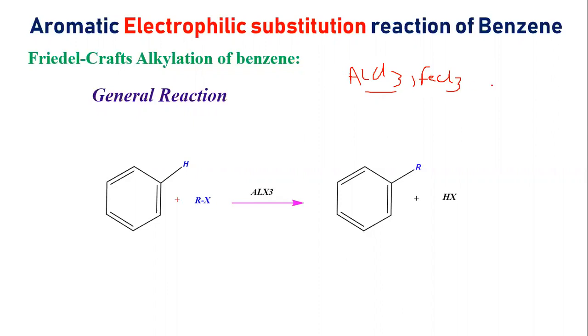In Acylation, you use C double bond O, an acyl group C double bond O, CH3, or you can call it R or any alkyl group. This is Friedel-Crafts Acylation in the presence of these catalysts.